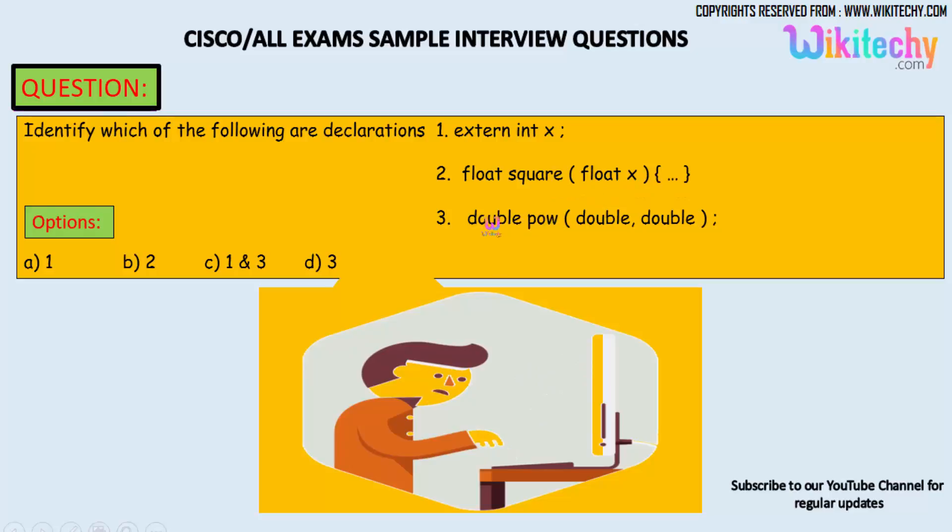Let's see: double power of double comma double. So declaration of your function pow with the two parameters double and returning the parameter double. The function is returning double. It can be.